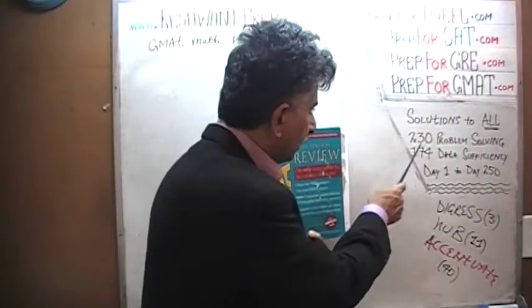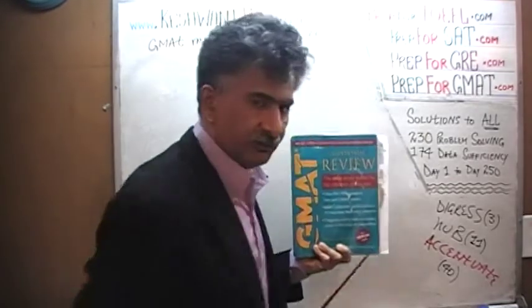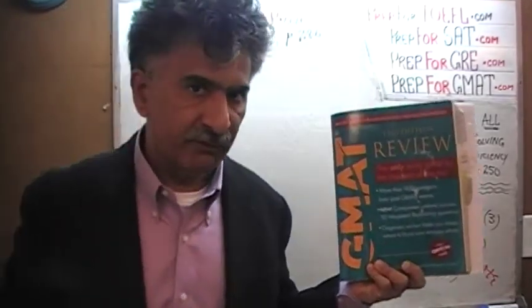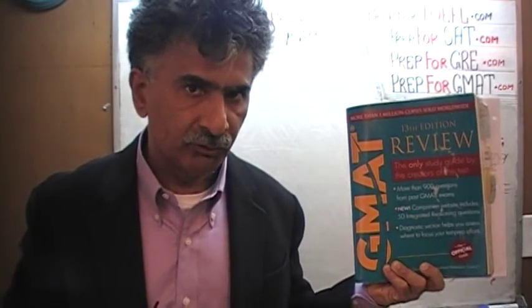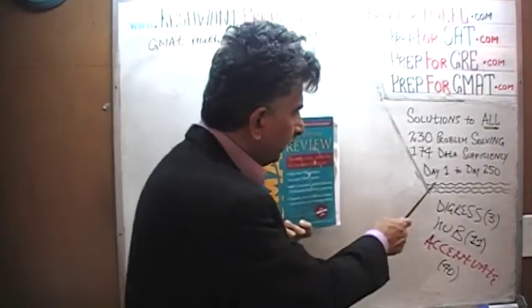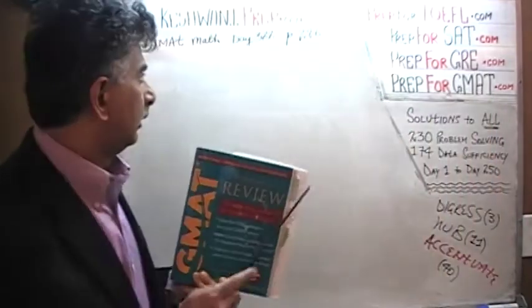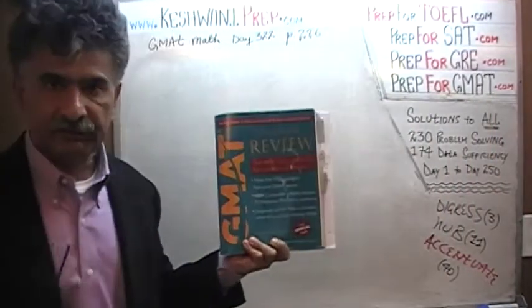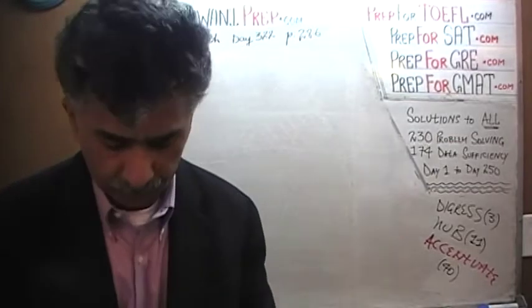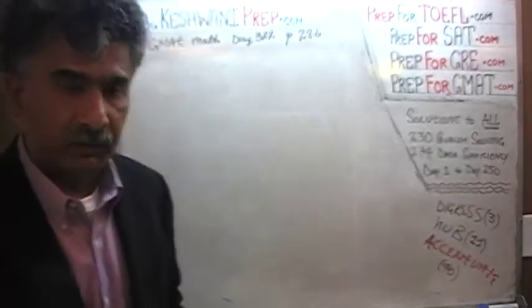The book contains 230 problem-solving questions and 174 data sufficiency questions. We have solved every single math problem from this book. If you are interested in watching any of the original solutions, you will find them from day number 1 through 250. Right now we are redoing the problems and we are on page number 286. Please turn to it — page 286, the very last problem on the page, number 130.